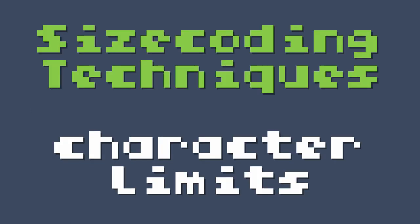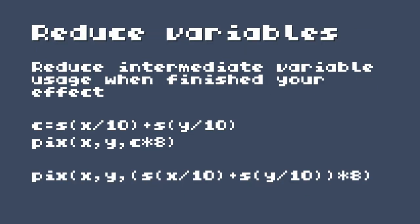So now we're going to move on to size coding techniques, specifically to deal with character limits. The first technique we're going to talk about is reducing variables. You can reduce intermediate variable usage when you've finished your effect. Get your effect working, and then after the fact, you can remove some intermediate variables. When we were working on our plasma effect, you'll have seen that we had an intermediate variable C for color.